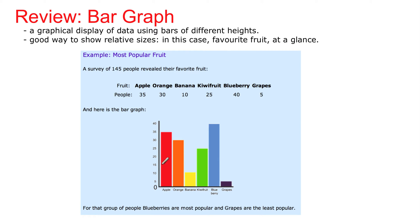From this, you can just look at where the highest bar is — blueberry is the highest — and the least is grape. Very simple. You've been doing this for a lot of years, so this is nothing new.